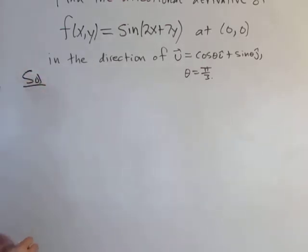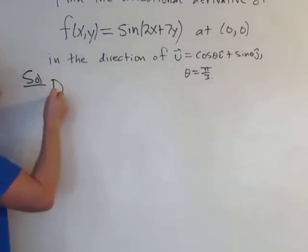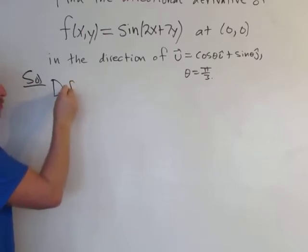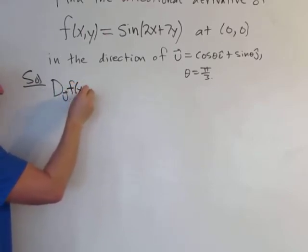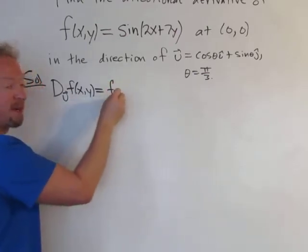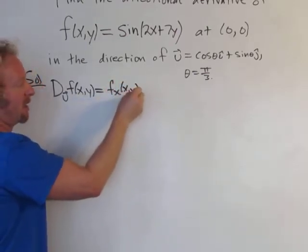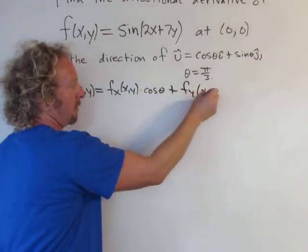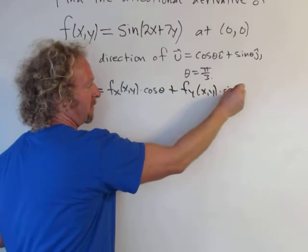So we'll start off by writing down the formula for the directional derivative in the direction of a unit vector. So big D sub u (you don't have to use the arrow, but I'll be correct and use it) of f(x,y) is simply the partial with respect to x at (x,y) times the cosine of theta plus the partial with respect to y times the sine of theta.